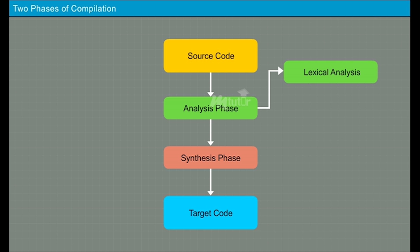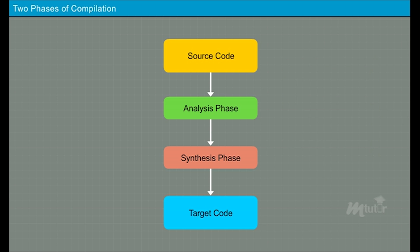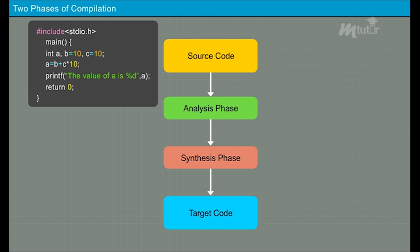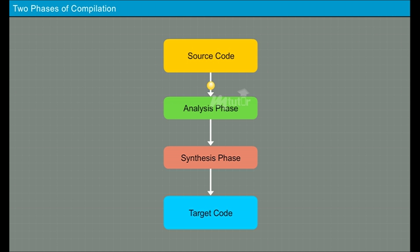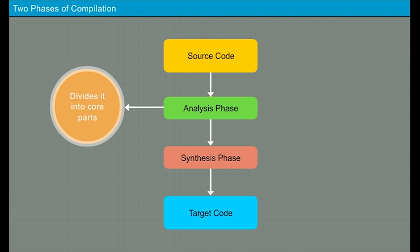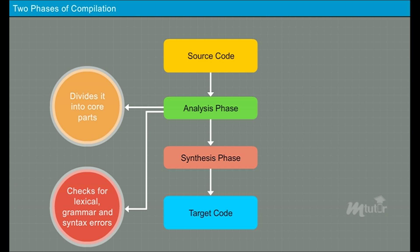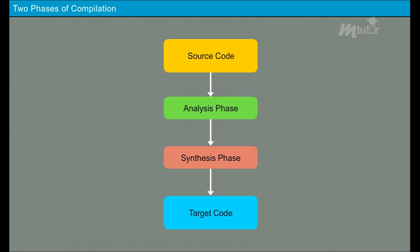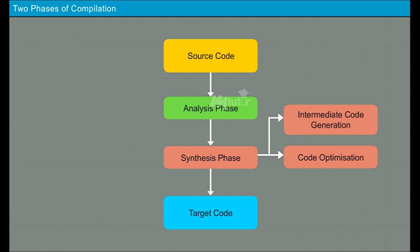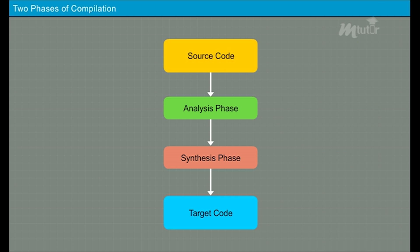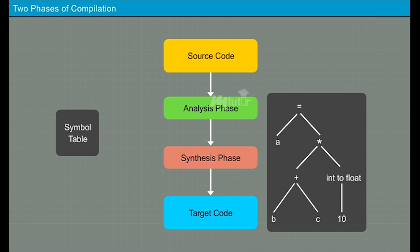The analysis phase is subdivided into three phases: lexical analysis, syntax analysis, and semantic analysis. The analysis phase takes the source program as its input, divides it into core parts, and checks for lexical, grammar, and syntax errors. The synthesis phase is subdivided into three phases: intermediate code generation, code optimization, and code generation. The synthesis phase takes the annotated parse tree and symbol table entries as its input and generates the target program that can be executed by the processor.